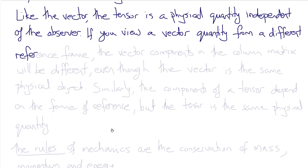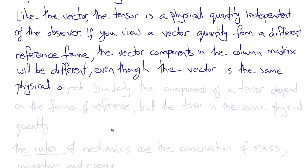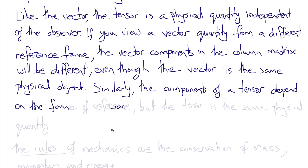This idea comes from the concept of observer invariance. If something is a physical quantity, it can't depend on who's looking at it. If I use one frame of reference and you use another, and we both look at the same physical quantity, we would come up with different components. There must be a relationship between the components I measured and those you measured, and that relationship purely has to do with the difference between my frame of reference and yours. This is the important distinction between a tensor and a matrix — the tensor is that physical object.